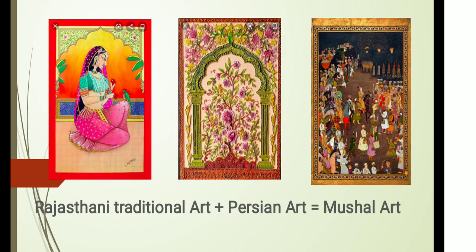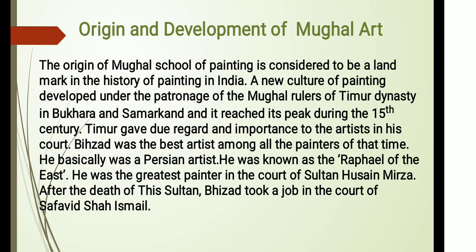In Mughal art, they used to make borders in the Persian style. Mughals were very much impressed by the Indian style of art, but the general ornamentation and border decoration was of Persian style. The origin of Mughal School of Painting is considered to be a landmark in the history of painting in India. A new culture of painting developed under the patronage of Mughal rulers of Timur dynasty in Bukhara and Samarkand, and it reached its peak during the 15th century.